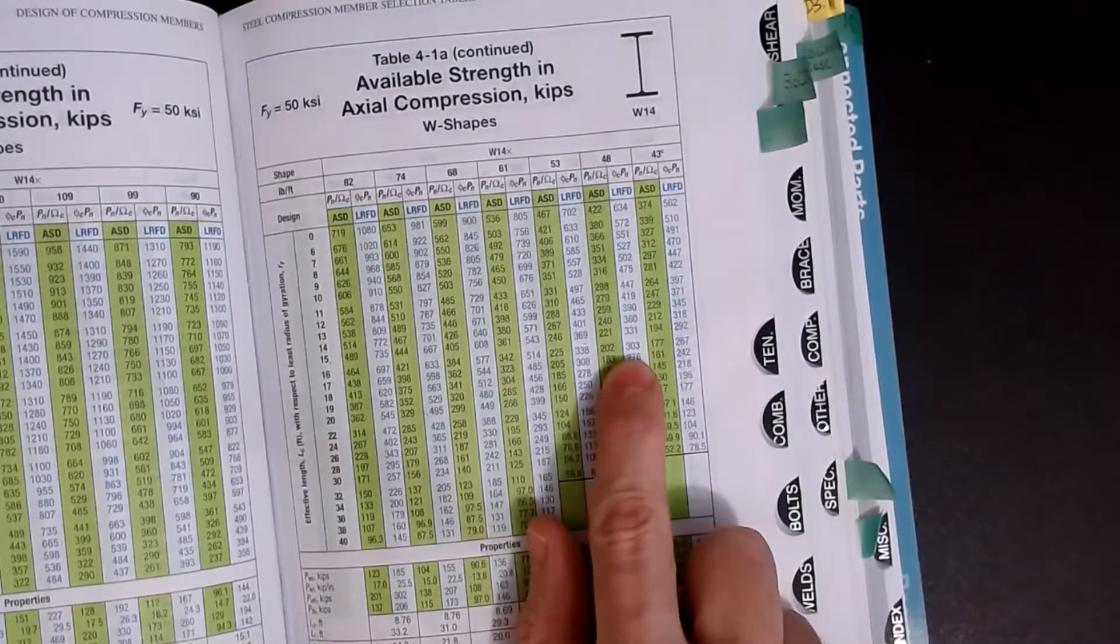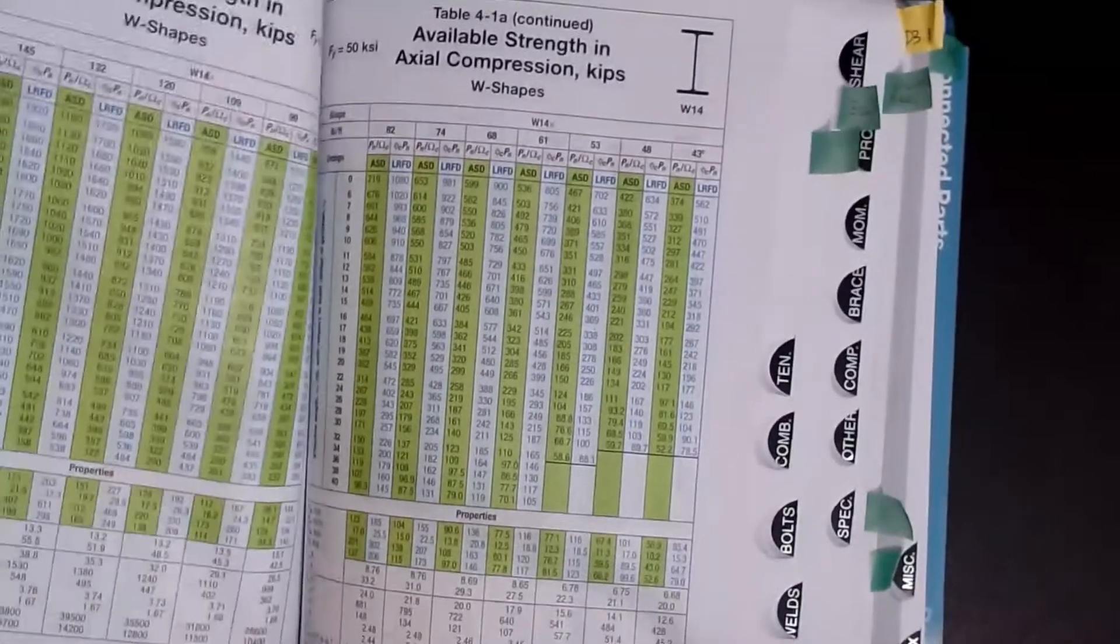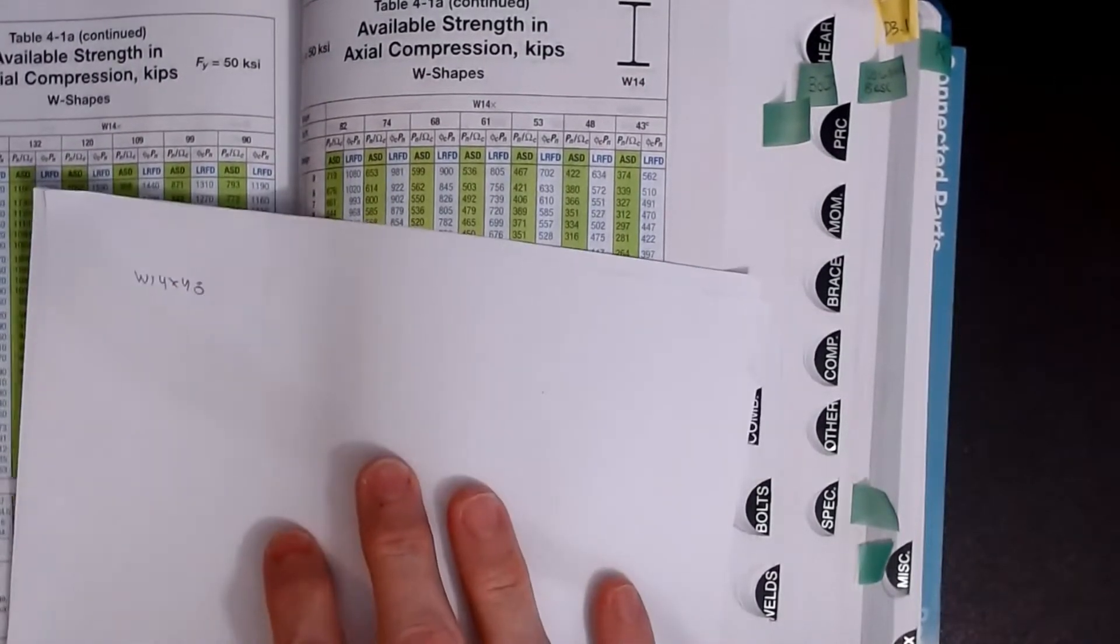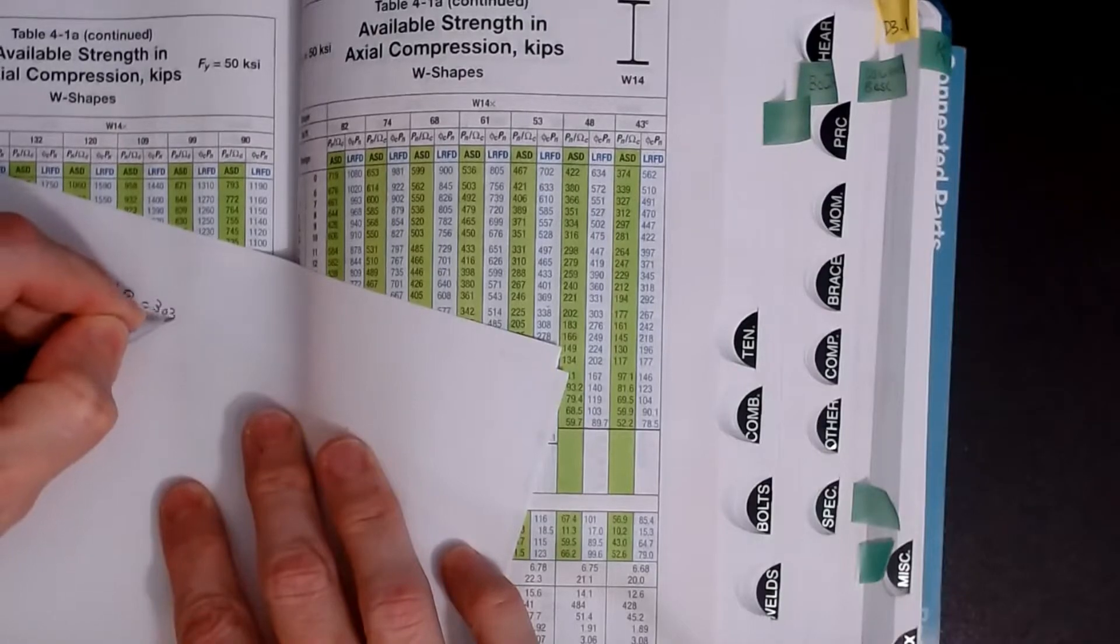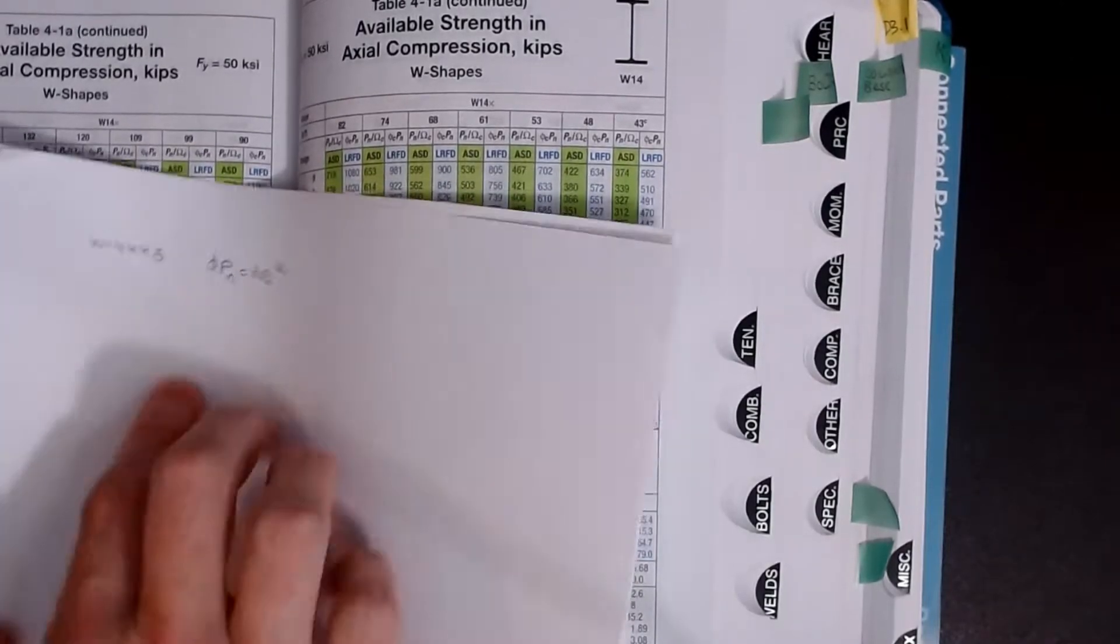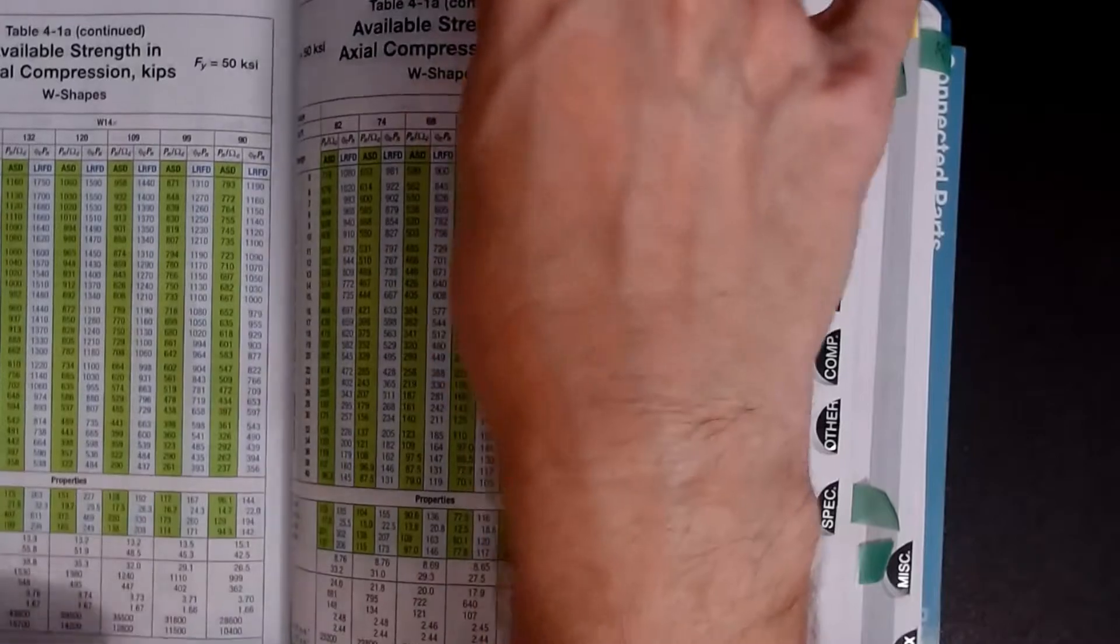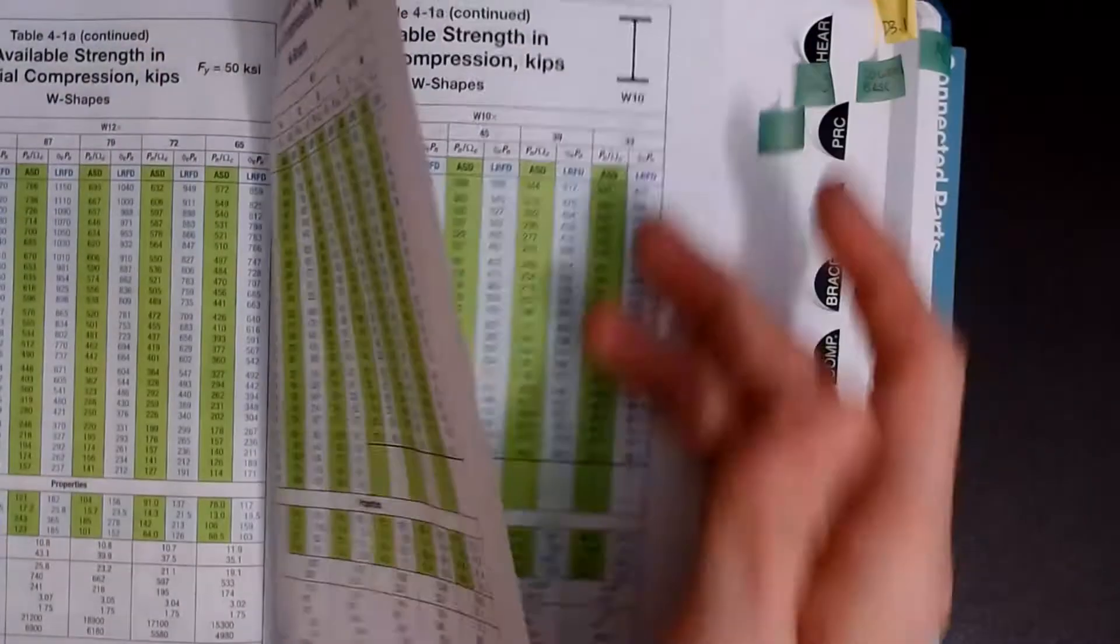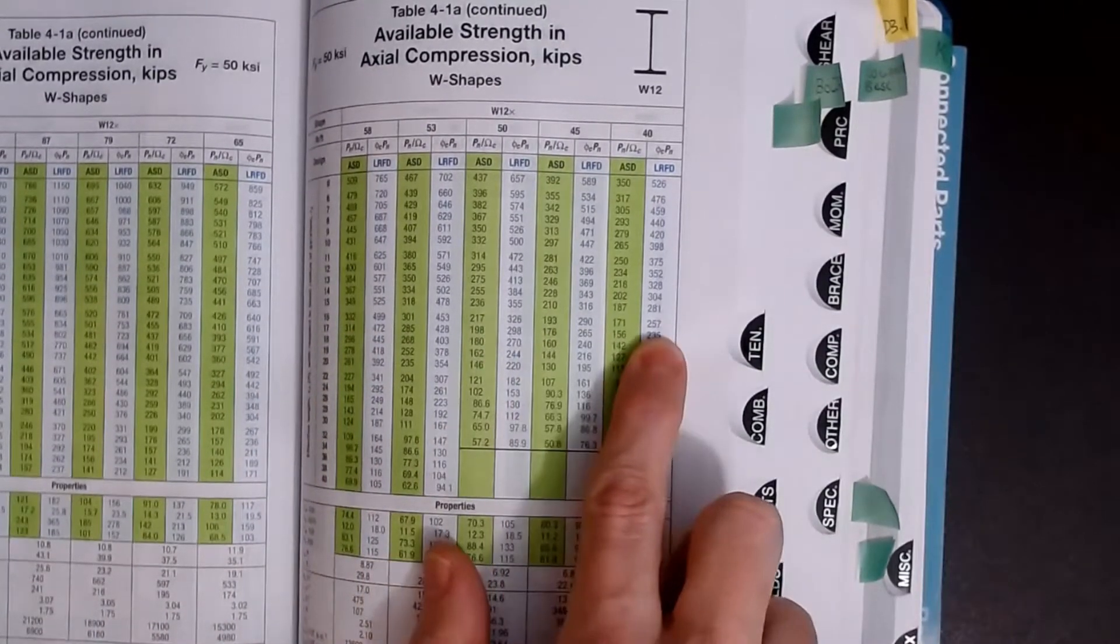Now let's flip over to the next page, let's jump down to say a 14 by 68 and if I come across on the 16 he's worth 577. So what you can do is actually come across on your KL value and read all the way across and take the first value that is larger than the number that you want. We want 274 for ours so that would be this guy's 303, and so that is a W14 by 48. So we'll make a note of that one, W14 by 48 is a good first guess, and that took all of about 10 seconds to find it. Also jot down phi PN as 303 kips.